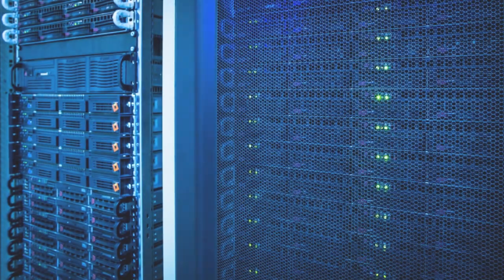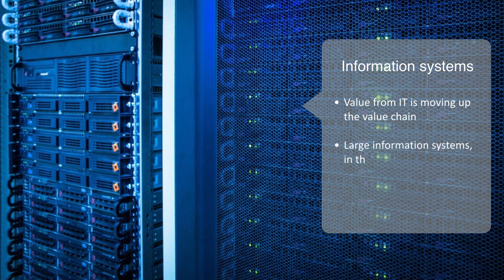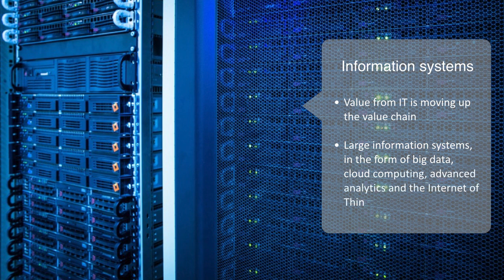As the exponential growth in processing power starts to slow down, the value of IT is moving up the value chain. Value is no longer gained so much from making computers faster and smaller, although this continues of course. It is instead currently moving up to the level of large information systems, in the form of Big Data, Cloud Computing, Advanced Analytics and the Internet of Things, all of which are at the forefront of the information revolution today.